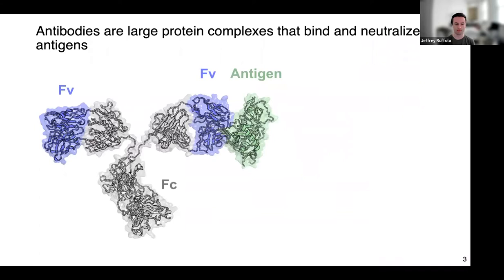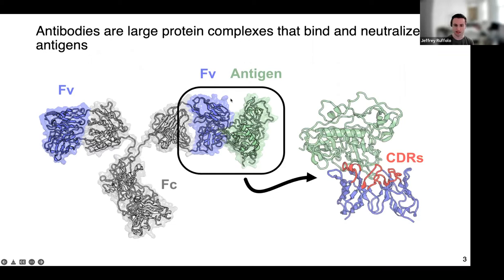Antibodies are large protein complexes composed of two heavy and two light chains. Their role is to bind and neutralize antigens. For antibody structure prediction, we focus on the FV region, shown in blue, which forms the contact with the antigen. The FV binding is mediated by six complementarity determining region loops called CDRs. Five of these CDRs adopt canonical folds and are easy to predict from sequence. But the third CDR loop of the heavy chain, CDRH3, has much more structural diversity due to sequence and length diversity. Because it plays a central role in binding the antigen, structural modeling of this loop is critical for engineering antibodies.